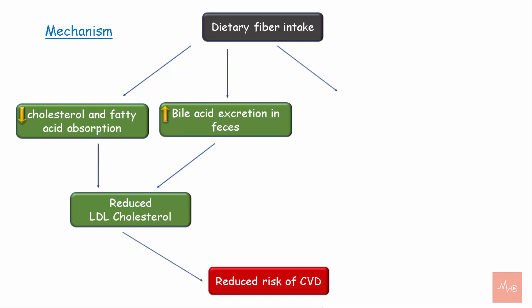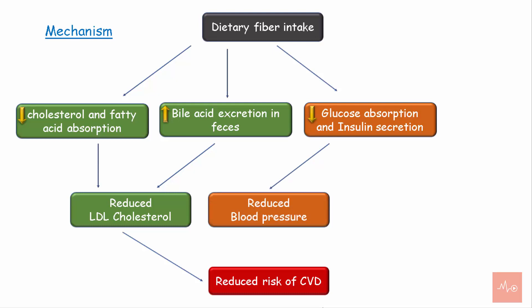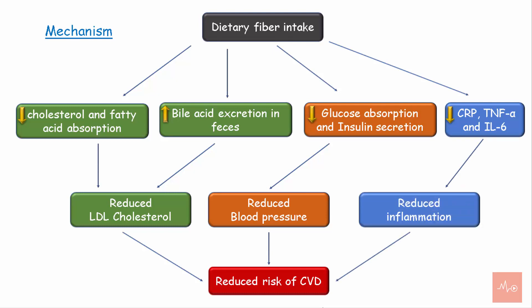Consumption of dietary fibers leads to formation of gel in the stomach and small intestine, reducing glucose absorption and insulin secretion, leading to lowering of blood pressure. Reduction in levels of inflammatory markers like C-reactive protein, tumor necrosis factor alpha, and interleukin-6 reduces systemic inflammation and in turn reduces the risk of cardiovascular disease.